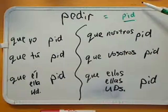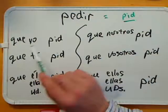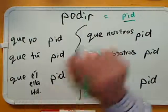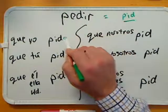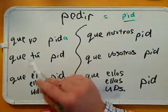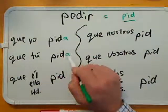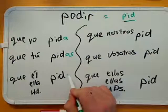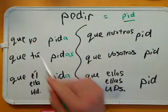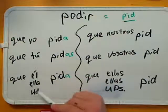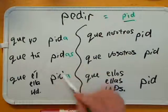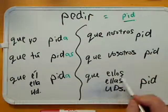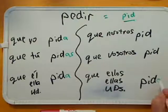If you see the conjugation, it is que yo pida. Putting in our subjunctive endings for an IR verb: que yo pida, que tú pidas, que él / que ella / usted pida. Note that yo and él/ella/usted in the present tense subjunctive are spelled the same. And then que ellos / que ellas / que ustedes pidan.